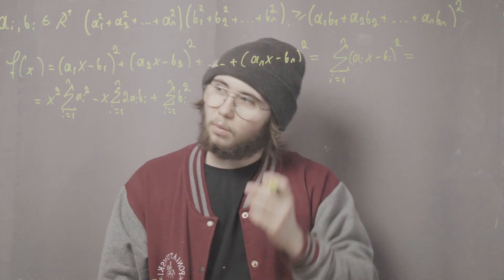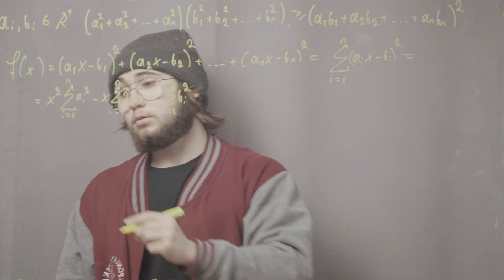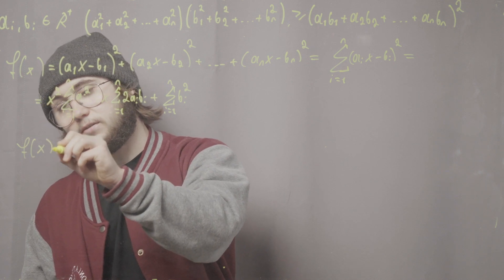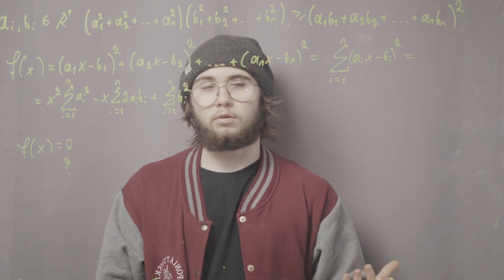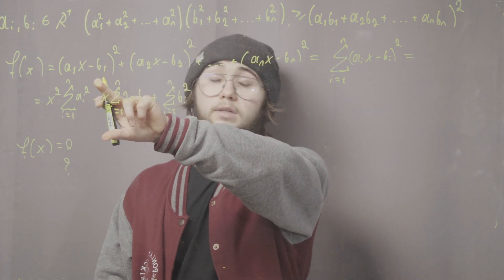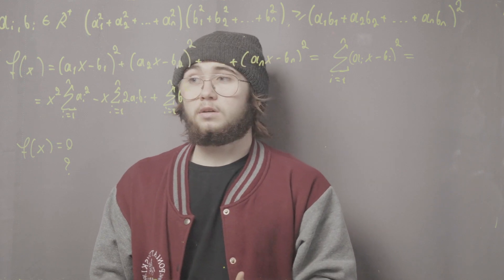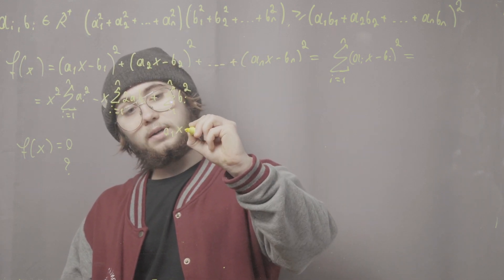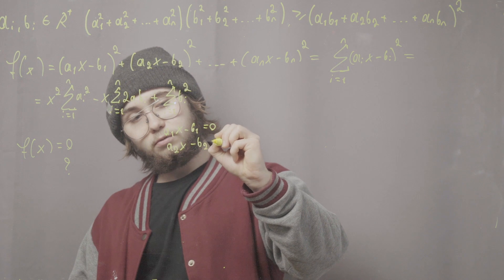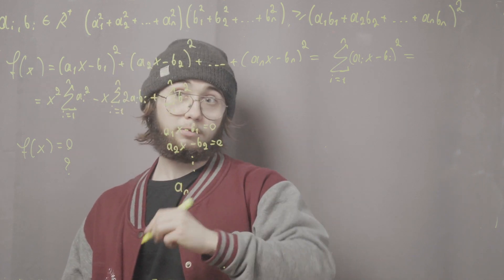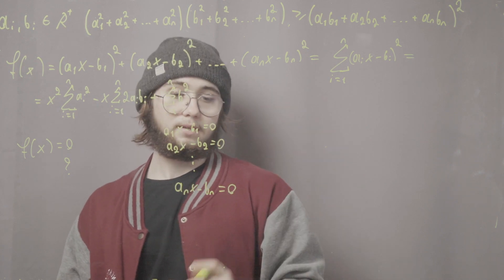Let's think about for what values of x does f(x) equal zero. If I want f(x) to equal zero, then each and every one of those squared terms would have to equal zero. So we'd need a₁x − b₁ = 0, a₂x − b₂ = 0, all the way up to aₙx − bₙ = 0.